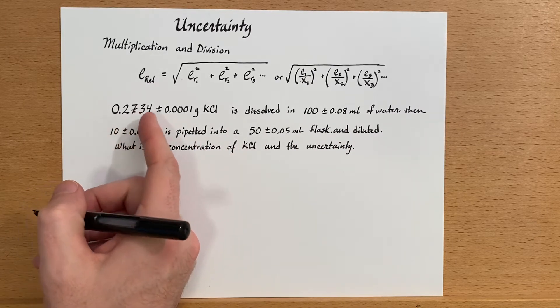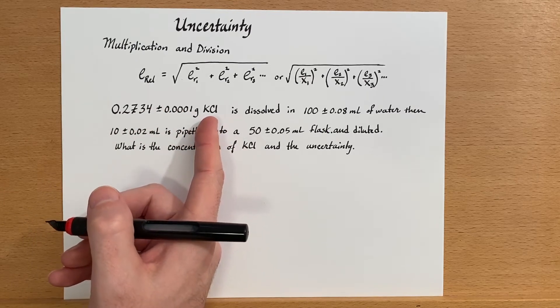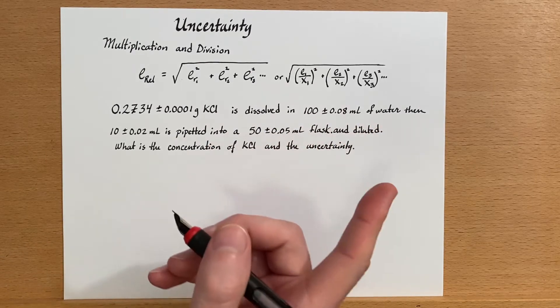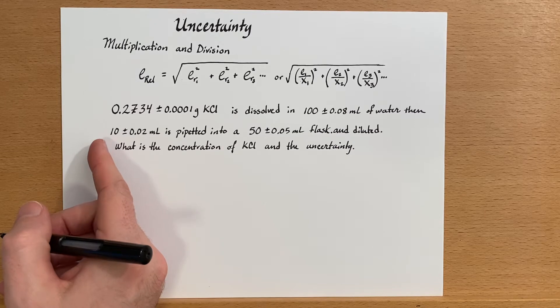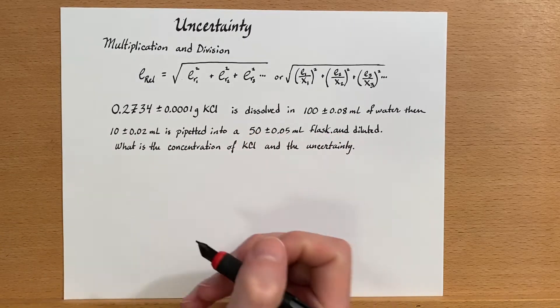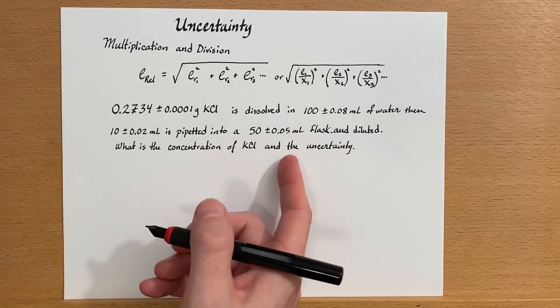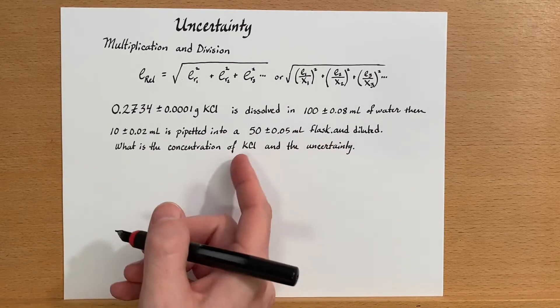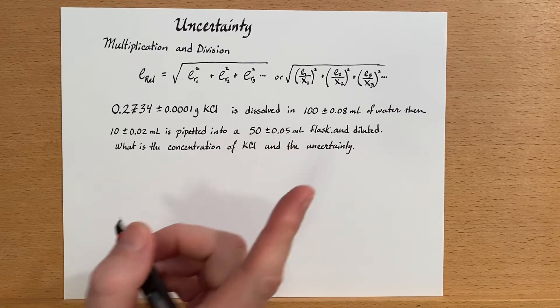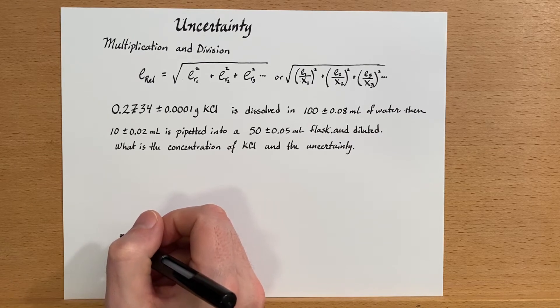0.2734 grams of potassium chloride is dissolved in 100 milliliters of water. Then 10 milliliters of that solution is pipetted into a 50 milliliter flask and it's diluted to the mark. And then the question is, what is the concentration of KCl and the uncertainty in that concentration? Okay, so first, let's determine what the concentration of the KCl is.